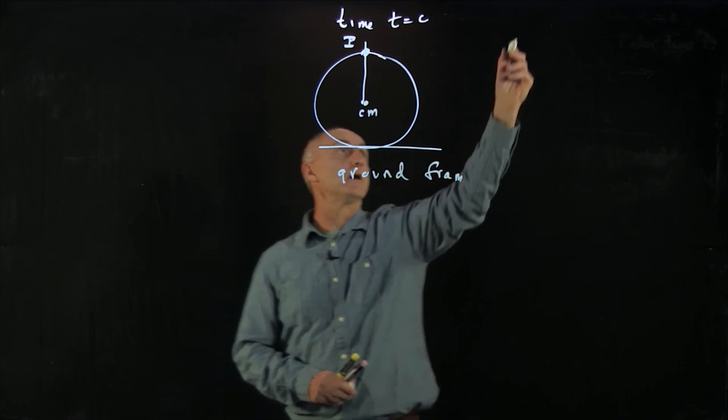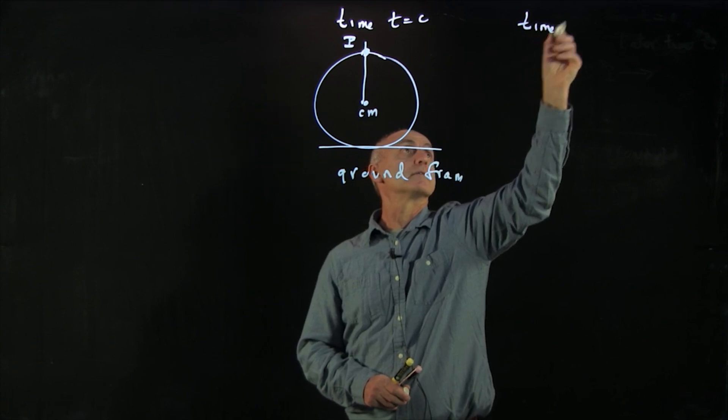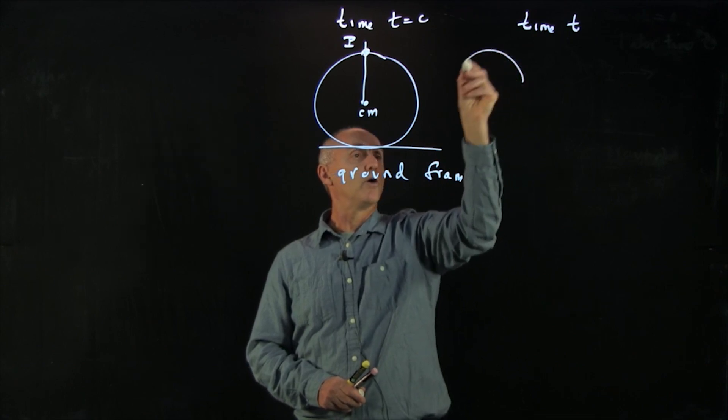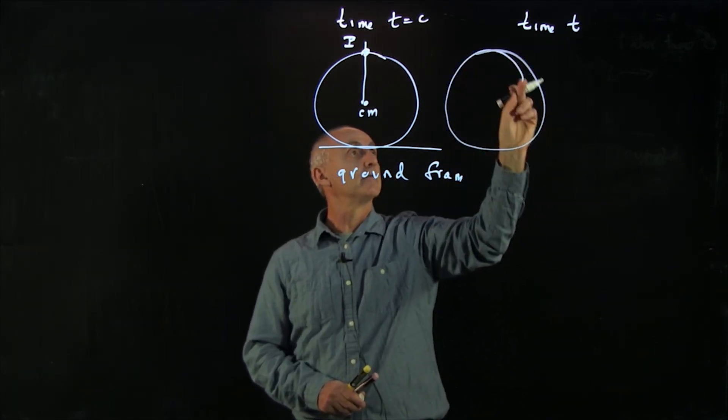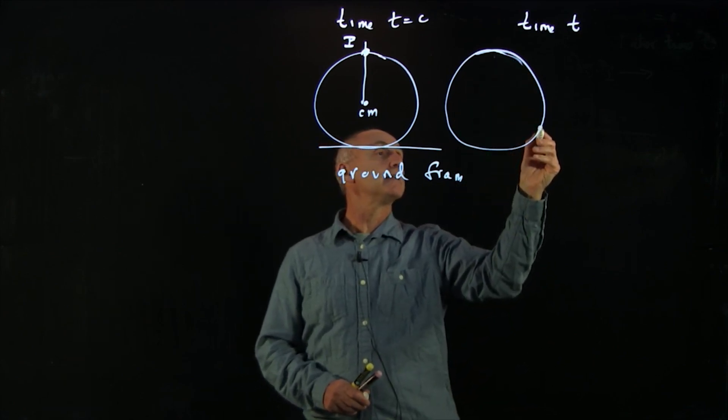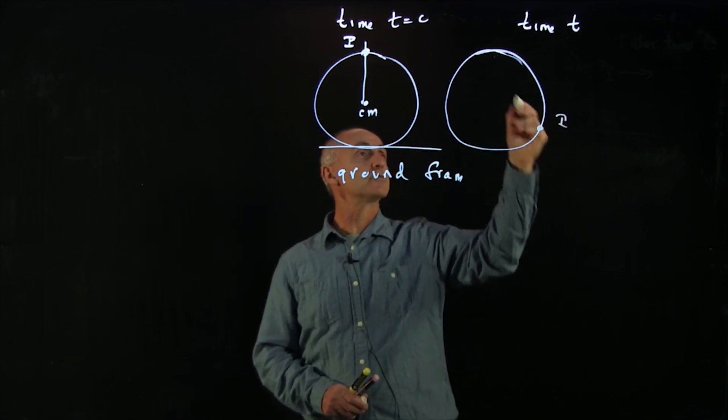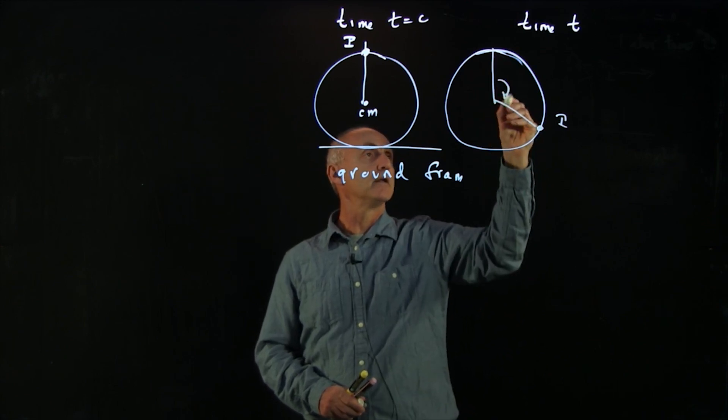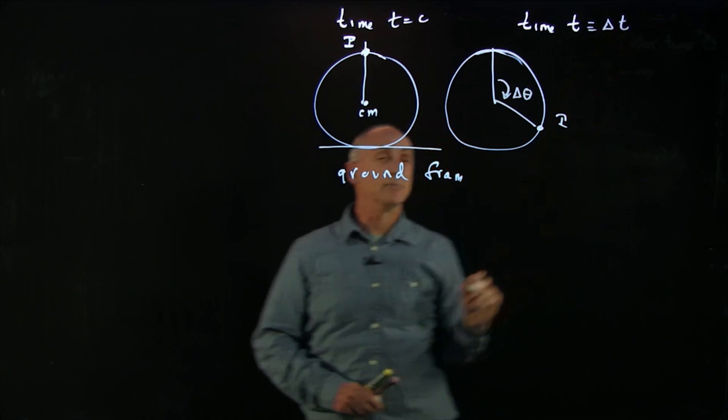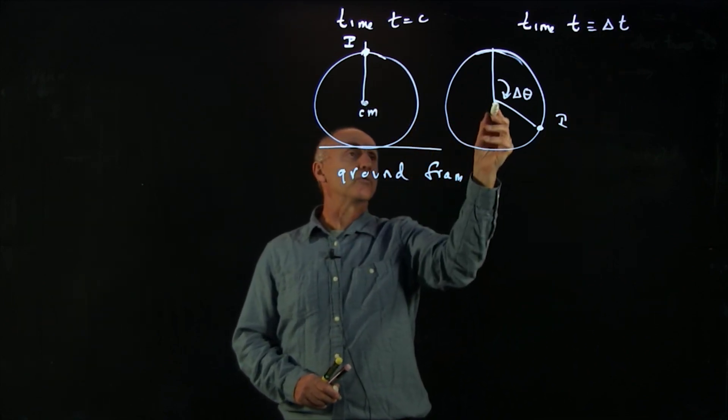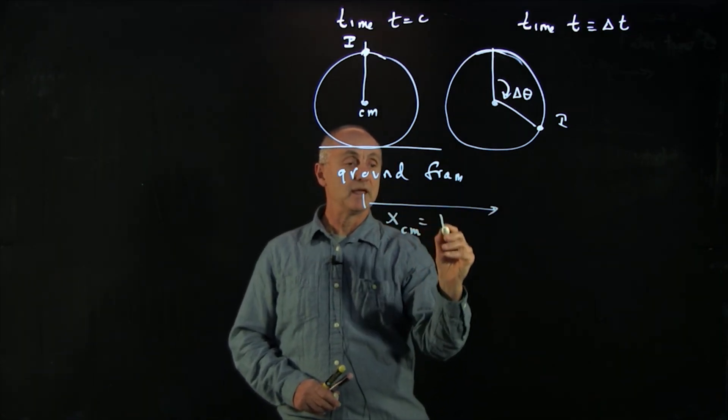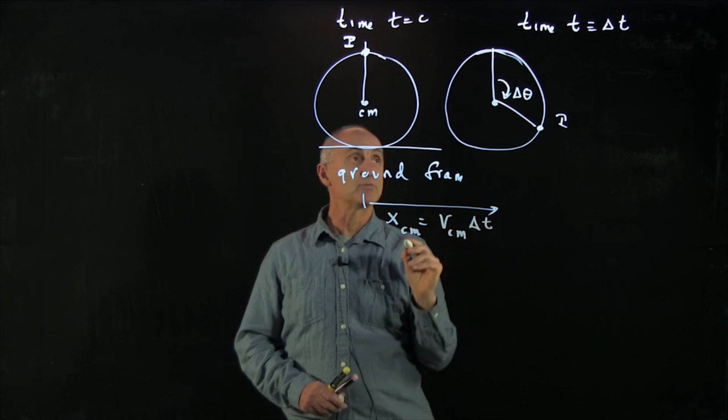And then at a later time, time t, the wheel has moved to the right. So let's draw the wheel over here. Not the greatest picture of the wheel, but we'll have the wheel over here. And now the point P has moved some angle delta theta. We'll call this time interval delta t. Now the center of mass of the wheel has moved a distance x cm, the velocity of the center of mass times delta t.